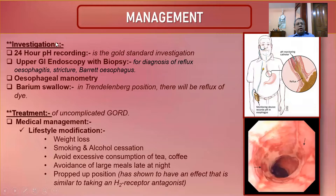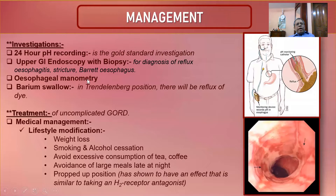Investigations for GORD: 24-hour pH recording is the gold standard investigation. The sensor is applied through the nose and pH is recorded at intervals over 24 hours and evaluated. Upper GI endoscopy and biopsy are used to diagnose reflux disease complications such as stricture and Barrett's esophagus. Esophageal manometry assesses the tone and pressure of the lower esophageal sphincter.